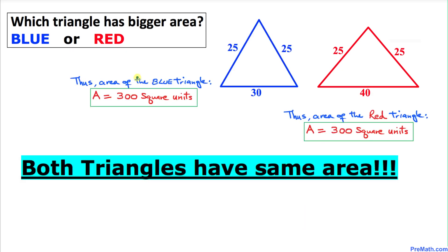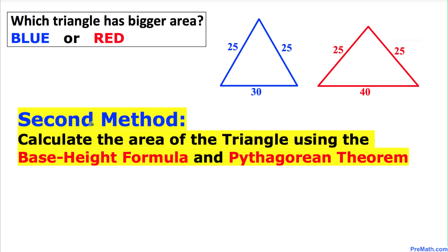As we can see, the area of the blue triangle is 300 and the area of the red triangle is 300 as well. Therefore, both triangles have the same area. Now let me show you the second method — how to calculate the area of these triangles using the base-height formula as well as the Pythagorean theorem.